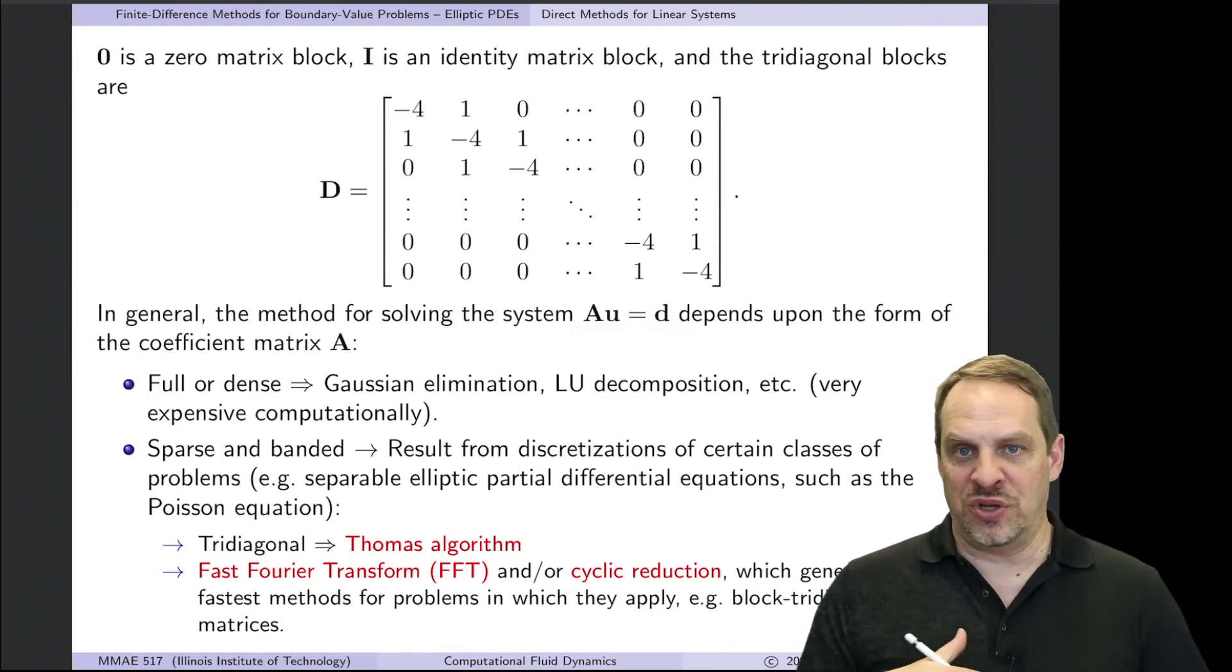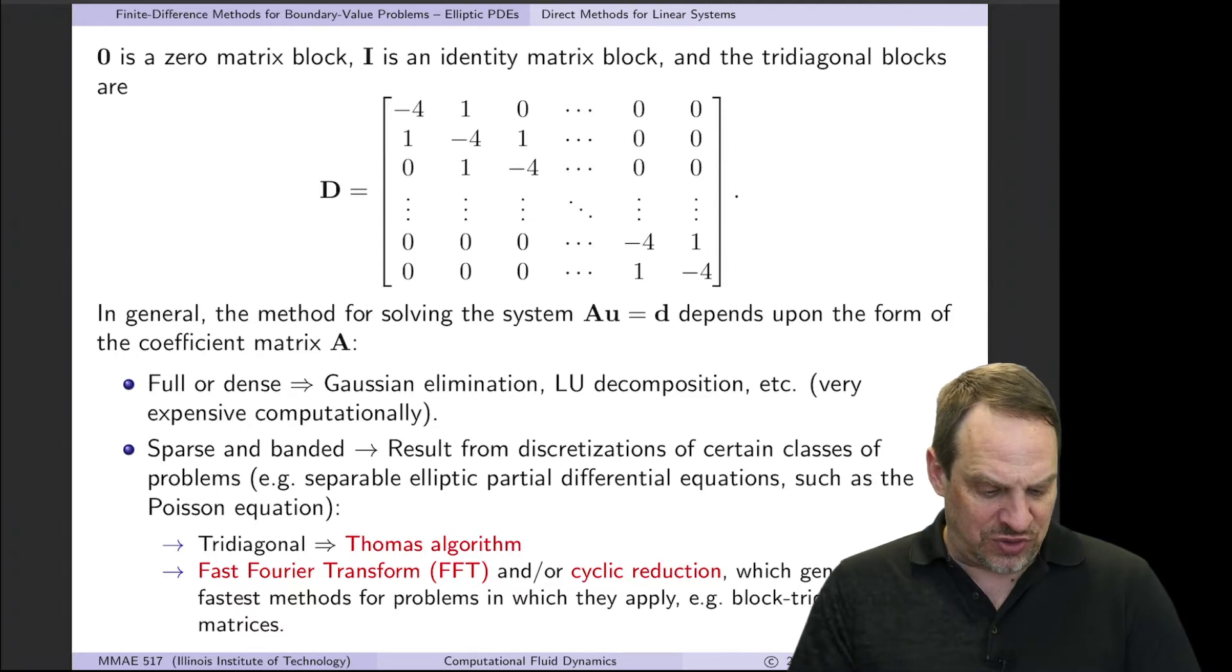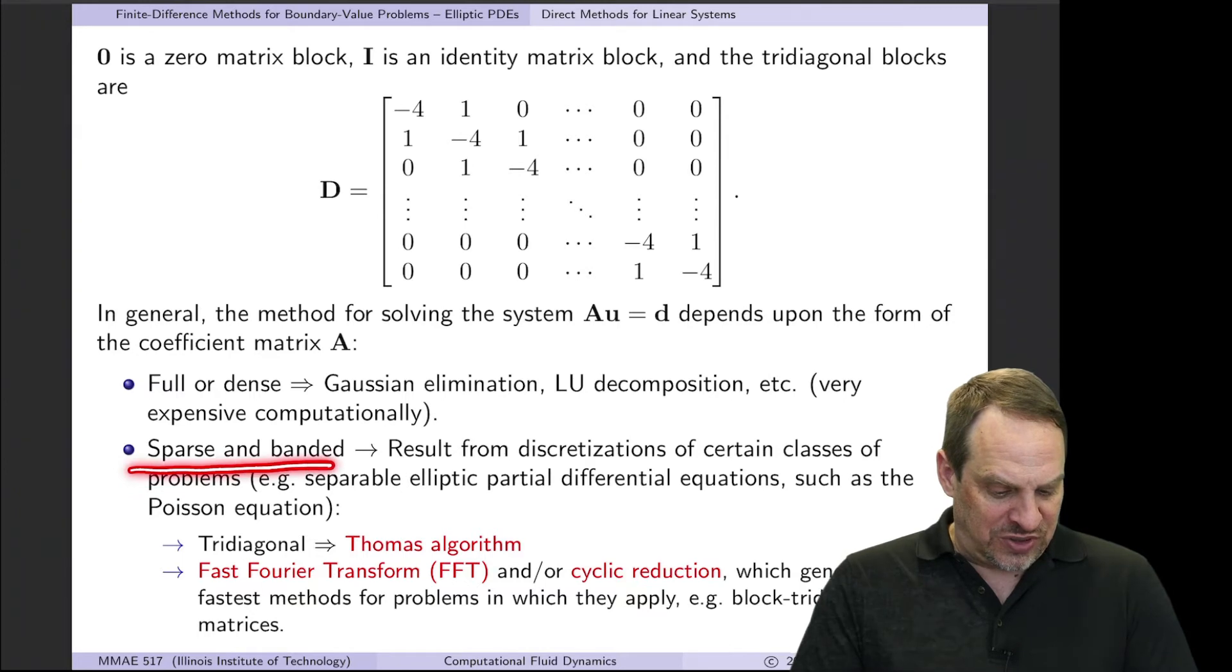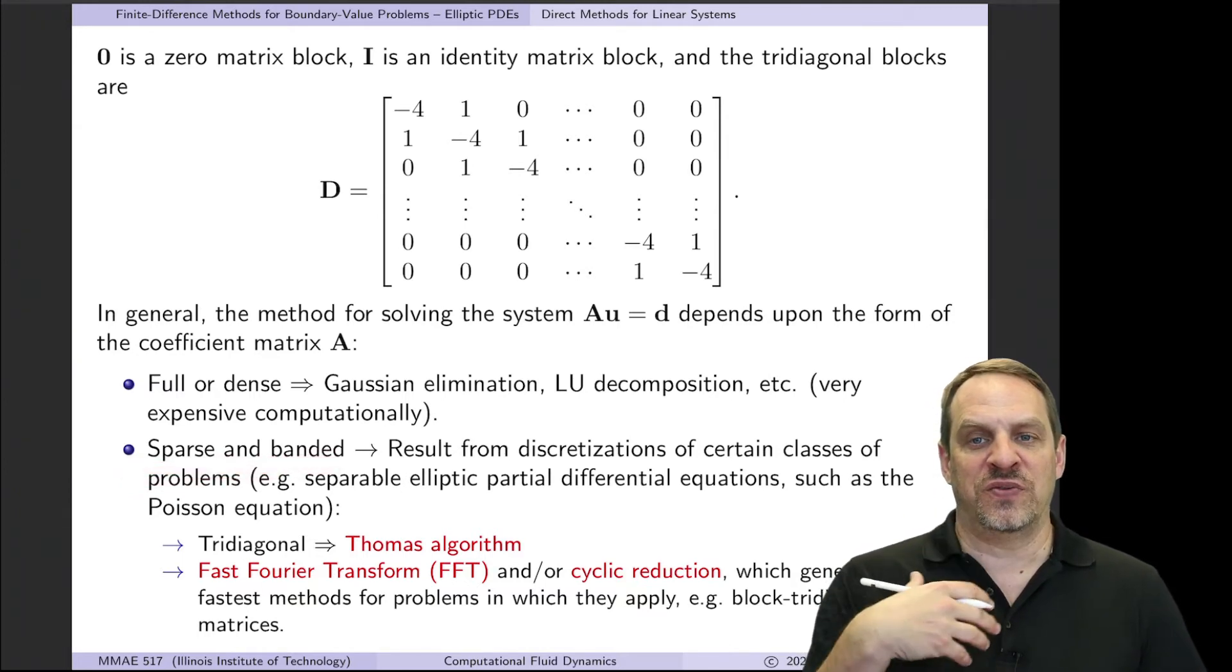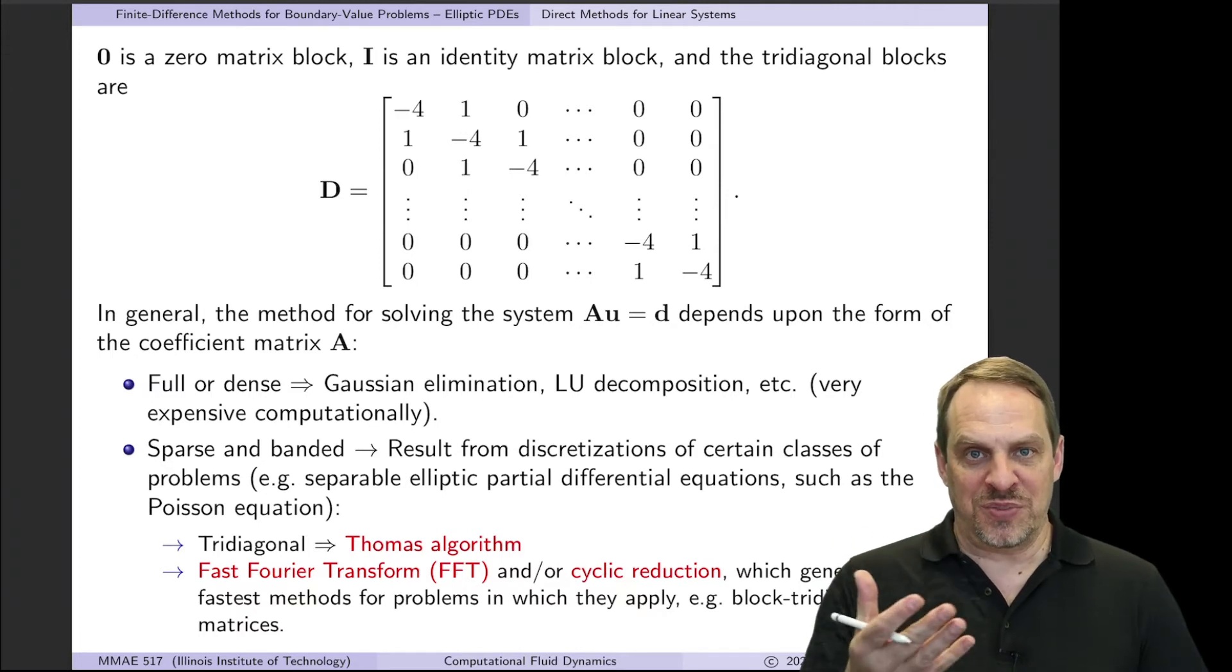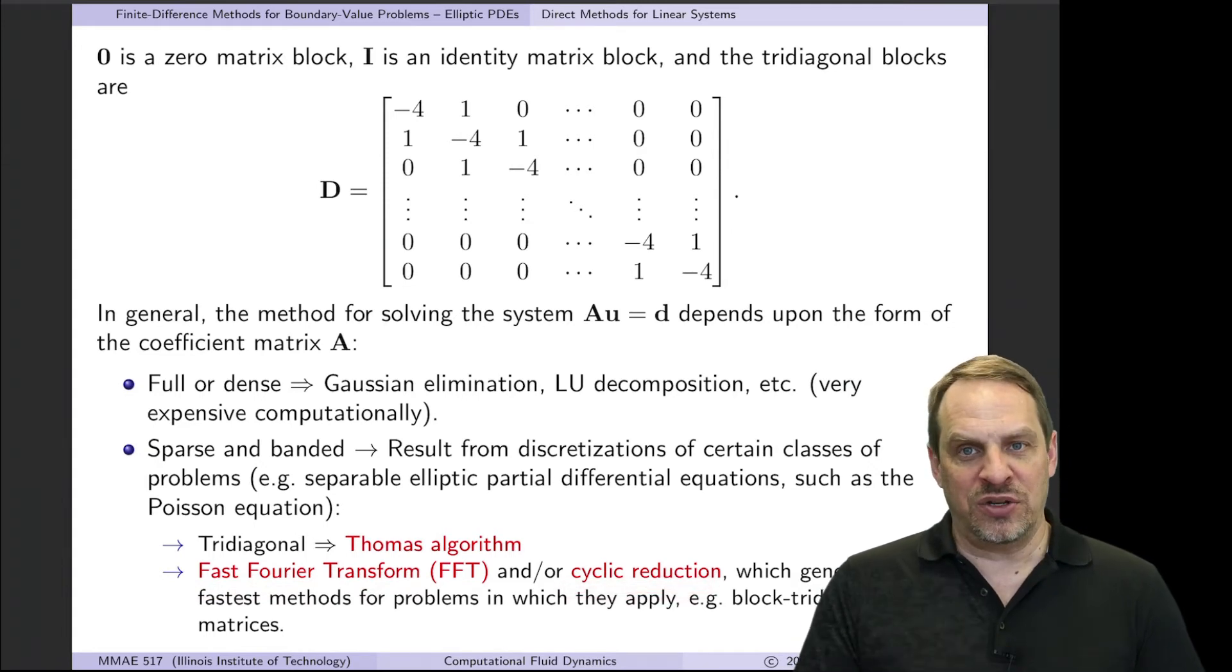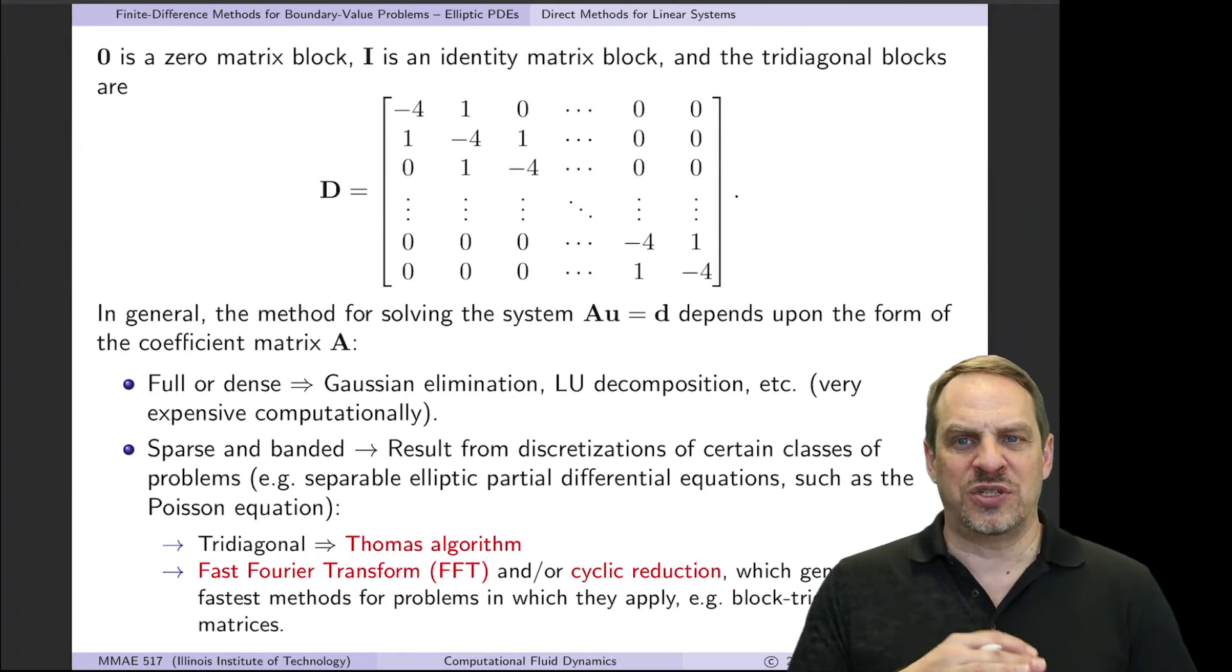Now we say this is block tridiagonal because in block form, we only have the main, the upper, and the lower diagonals that are non-zero. Everything else is zero. So it's not tridiagonal but it's block tridiagonal. The sizes of the blocks: there are capital I plus 1 blocks in both directions. This is a square matrix, and each block is capital J plus 1 by capital J plus 1. All we've done is convert our finite difference equation written in a two-dimensional way, now written in a 1D way. So now we have a big system of linear algebra equations with capital I plus 1 times capital J plus 1 unknowns. But it is a big system of equations, Au equals D, so we can use any method we want.